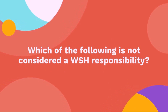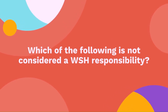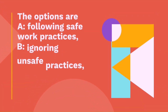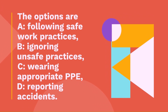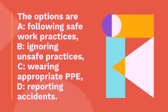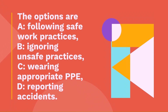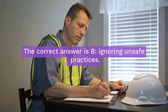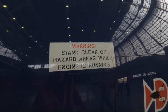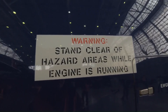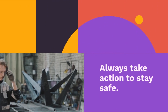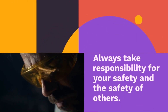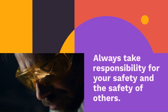Question 17: Which of the following is not considered a WSH responsibility? The options are: A — following safe work practices, B — ignoring unsafe practices, C — wearing appropriate PPE, D — reporting accidents. The correct answer is ignoring unsafe practices. Ignoring unsafe practices is like ignoring a fire alarm — it can lead to serious consequences. Always take responsibility for your safety and the safety of others.